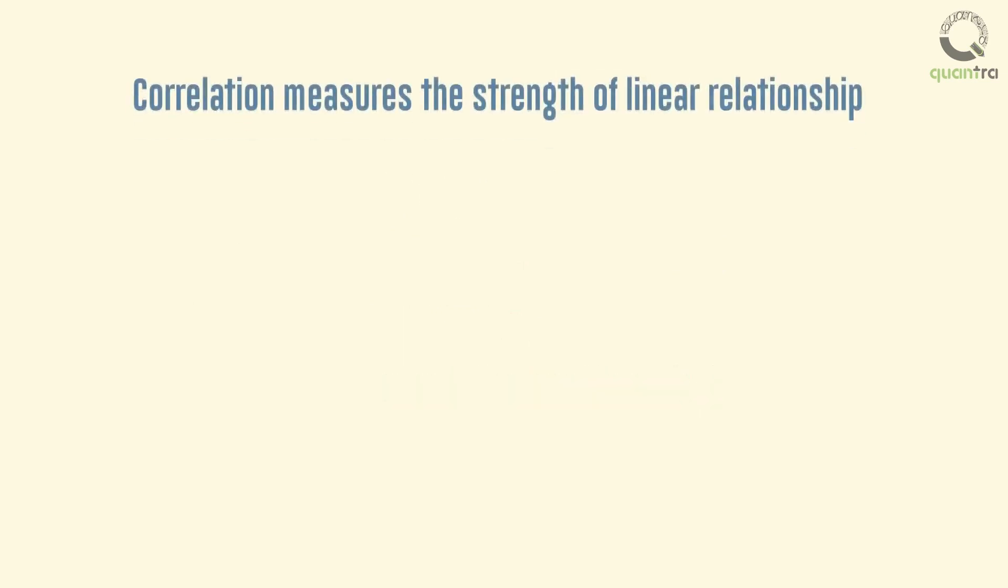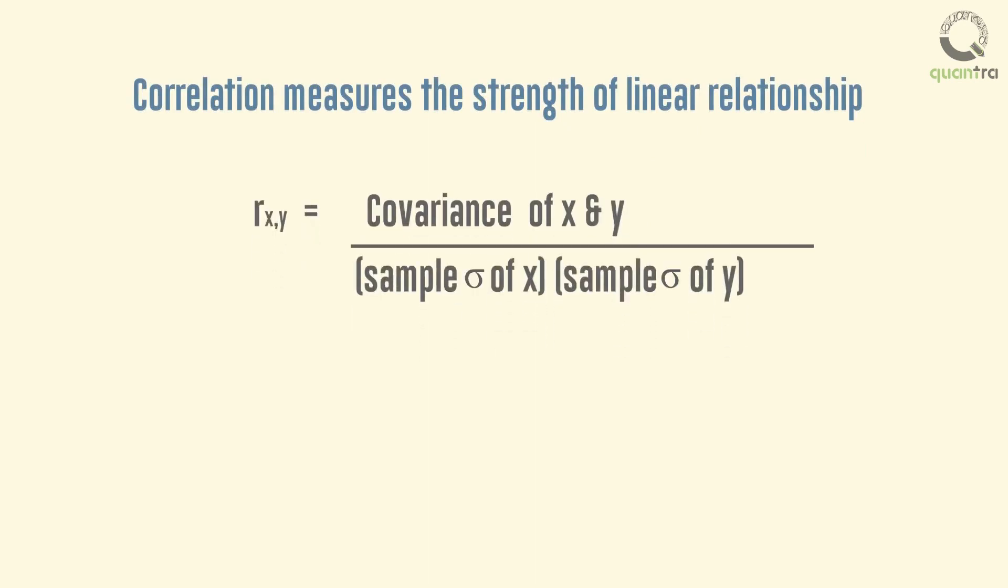Correlation measures the strength of linear relationship between x and y. It's a pure measure and has no units. Correlation has a range of minus 1 to plus 1.